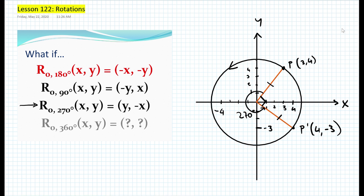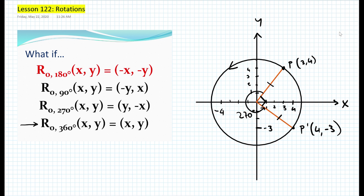The last one is pretty obvious: if you go around 360 degrees, the image will be the same as the pre-image. So a rotation about the origin by 360 degrees of any point (x, y) gives (x, y). Those are basically the general rules. Obviously, there could be deviations — for example, what if you rotate an image over a point other than the origin? That's something we can also deal with in geometry.